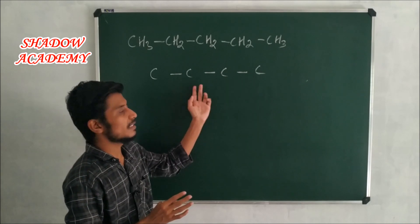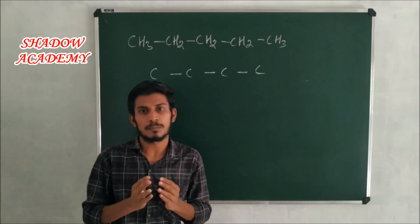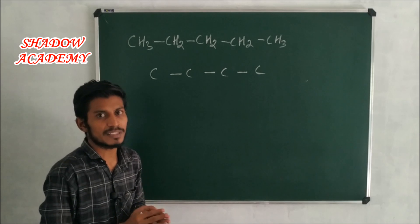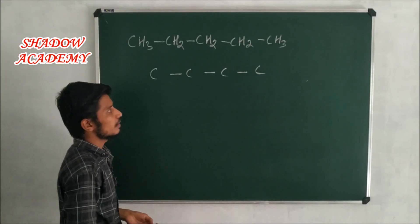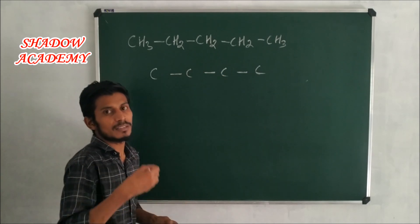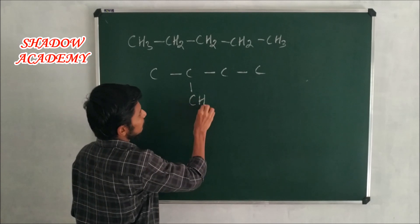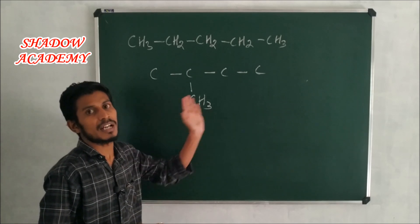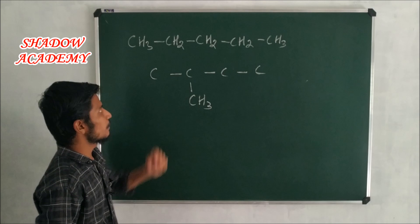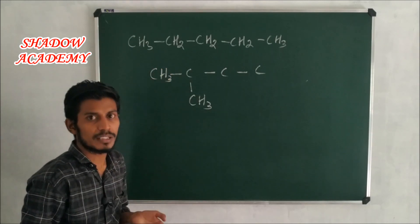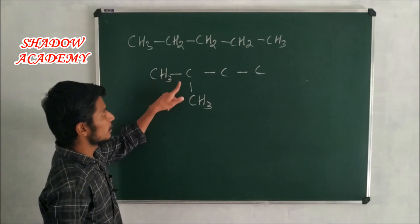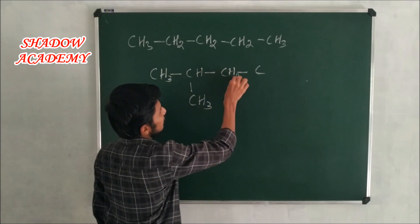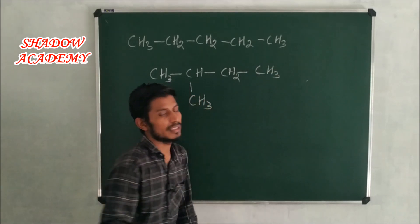We make a branch substitute on the second carbon using CH3. We fill up the carbons — because we are using 5 carbons total, the remaining hydrogens complete the structure. With 4 carbons in the main chain and one CH3 branch, we satisfy all valences.